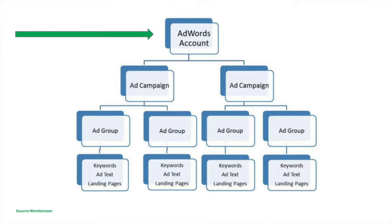Once you have created the account you can get going with building your AdWords campaigns. A campaign is essentially a set of related ad groups that is often used to organize the categories of products or services that you offer. Each campaign is usually centered on a goal that aligns with the main thing you want to get — such as sales or lead generation. Some of the most common campaign types are search campaigns, display campaigns, and video campaigns. In most cases, campaign types can't be changed once the campaign has been created.